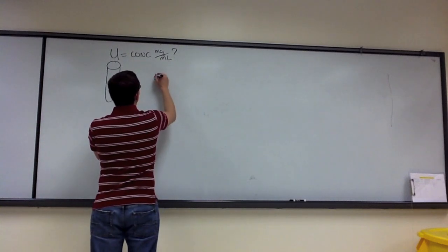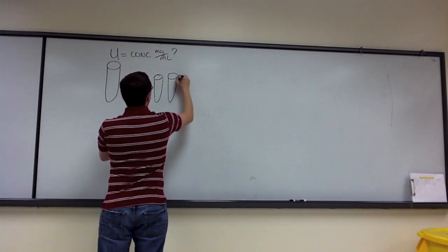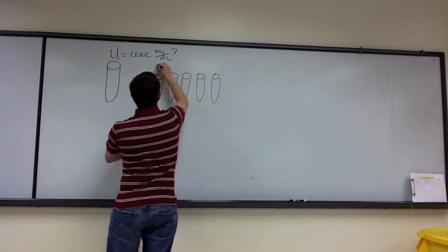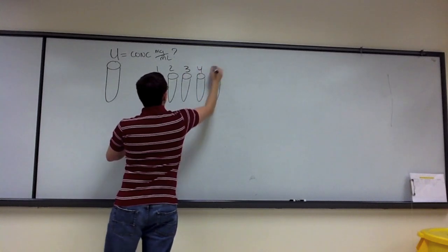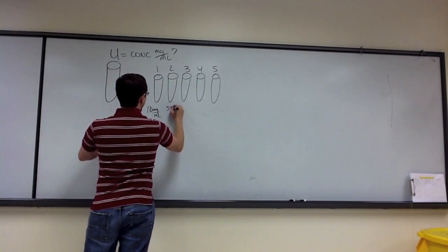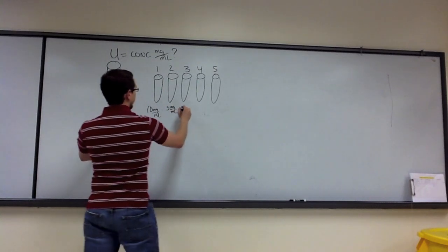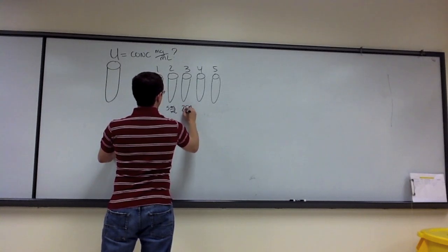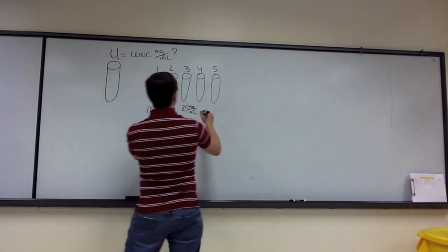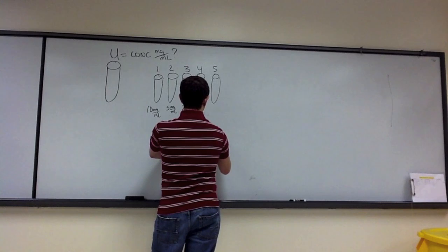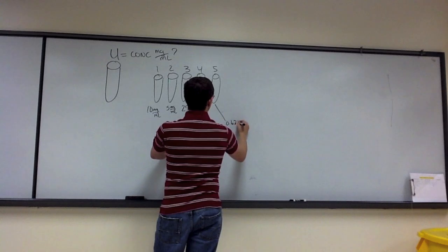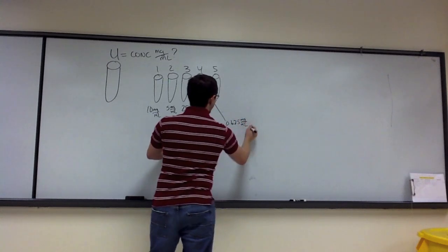What you now have after doing your serial dilution is five tubes, one through five. Each of those tubes has a concentration that is known, and each concentration is half of the previous concentration. That is 2.5 milligrams per milliliter, then 1.25 milligrams per milliliter, and then for the last one, 0.625 milligrams per milliliter, as previously discussed.